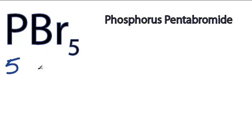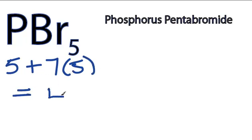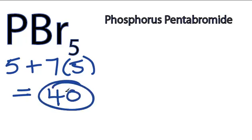Phosphorus has 5 valence electrons plus 7 for bromine, but we have 5 bromines. So we have 5 plus 7 times 5 is 35, so we have 40 total valence electrons.